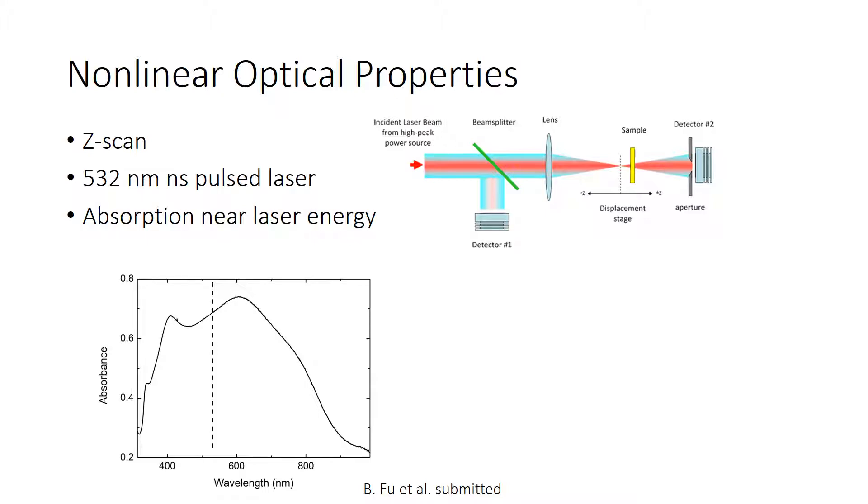In our case, we use a 532 nanometer pulsed laser with a pulse duration in the nanosecond range and the silver nanoplates solution with a broad plasmon resonance just above 600 nanometers. The Z-scan experiment shows a strong increase in transmittance near the focus, which confirms the strong saturable absorption behavior of the material.